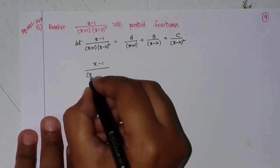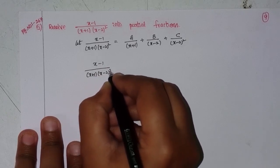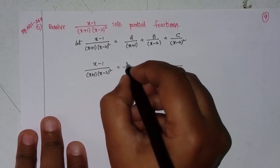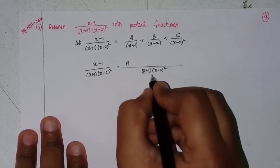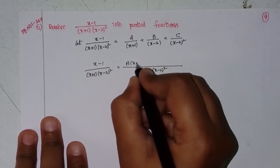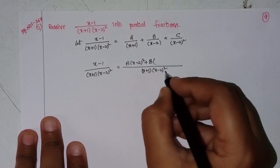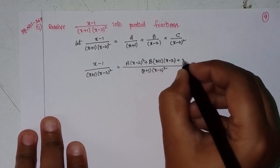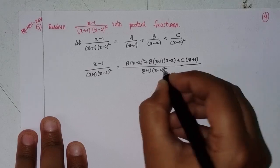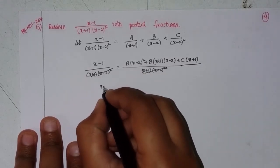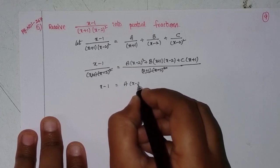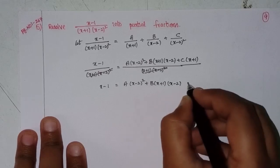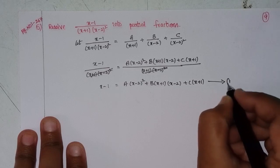(x minus 1) divided by (x plus 1)(x minus 2)² — multiply both sides by the LCM, which is (x plus 1)(x minus 2)². The (x plus 1) cancels for A, leaving (x minus 2)². For B, (x minus 2) cancels leaving (x plus 1)(x minus 2). Plus C into (x plus 1). After denominators cancel: x minus 1 equals A(x minus 2)² plus B(x plus 1)(x minus 2) plus C(x plus 1). This is Equation 1.